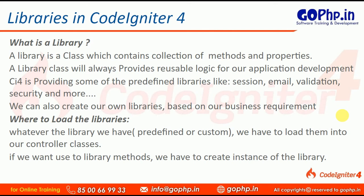If you want to use library methods — whether predefined or custom — we have to create an instance, meaning we have to create an object of the library. In the previous session we used a model class in our controller: we created an instance of the model class and used that object to access the model's methods and pass data to the view. In the same manner, to access a library method — whether for validation, sending email, creating a session, or working with security — we first instantiate an object for that library and then access the library methods through that object.